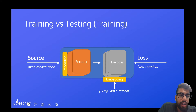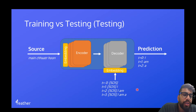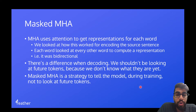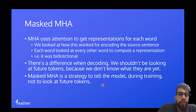If we're decoding 'I am', we shouldn't be looking at the word 'student' to work out the representations of 'I' and 'am', because we haven't decoded 'student' yet. Masked multi-head attention is a strategy to tell the model that during training it's not allowed to look at future tokens. We input the whole sentence for efficiency — it makes training faster — but we tell the model that anything in the future is off limits.